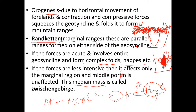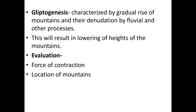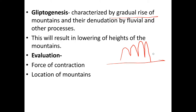The third process is glyptogenesis, characterized by the gradual rise of mountains and their denudation by fluvial and other processes. This results in the lowering of the heights of mountains. Once mountains are formed, they continuously undergo erosion by wind, glaciers, or water, and through denudational processes their heights are gradually lowered.